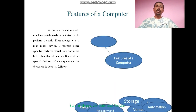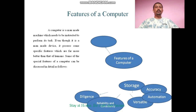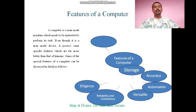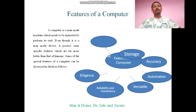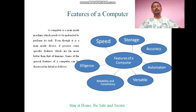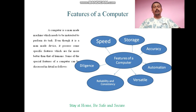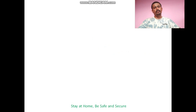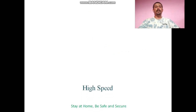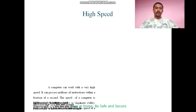Some of the special features of a computer can be discussed in detail as: high speed, storage, accuracy, automation, versatile, reliability and consistency, diligence, etc. Now let us go through all these features one by one. The first feature of a computer is high speed — a computer can work with very high speed.